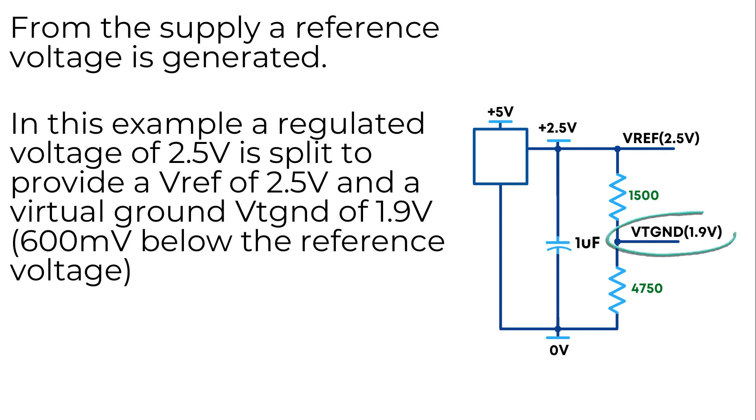This voltage is then further split by use of a resistor network to provide a VREF of 2.5 volts and a virtual ground voltage of 1.9 volts, a difference of 600 millivolts. This 600 millivolts difference in potential is what allows the lead-free oxygen sensor to work.